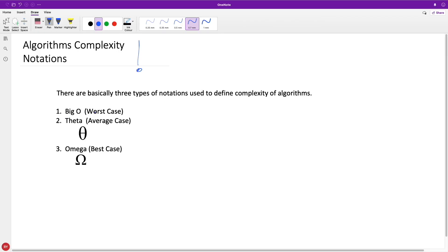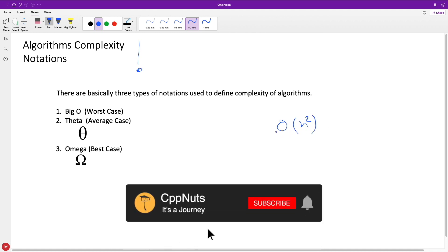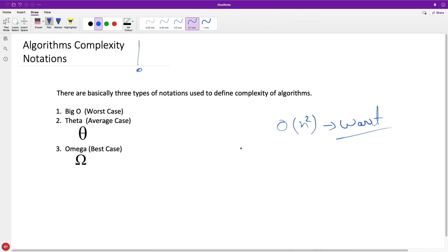Mostly we go for Big O notations—like somebody asks you and you tell them order of n, n log n, or n square—but no, this always denotes worst case complexity. There are basically three types of notation used to define complexity of algorithms.